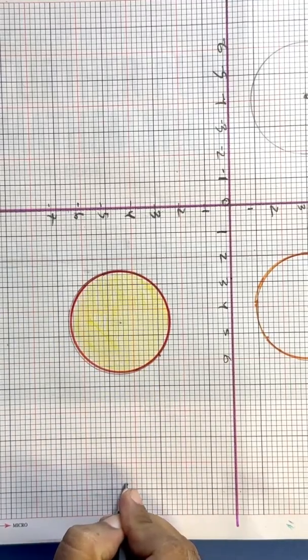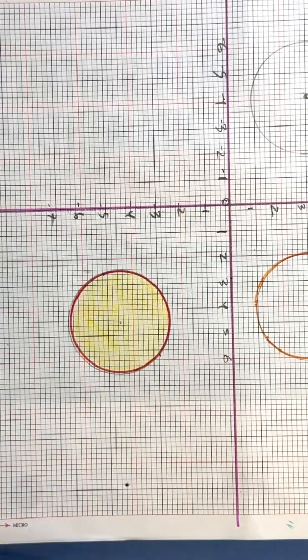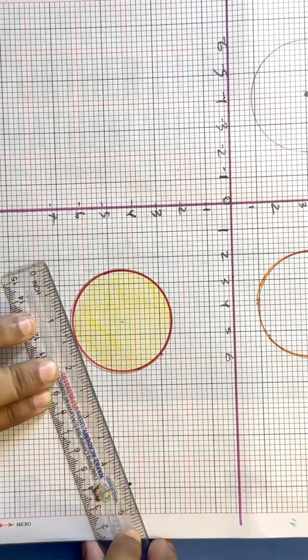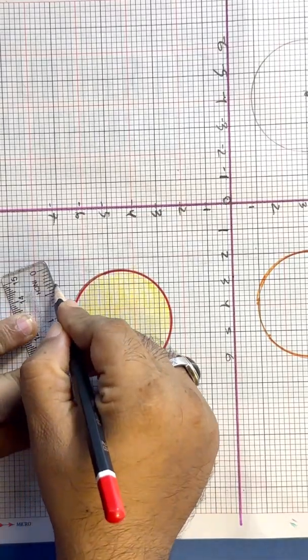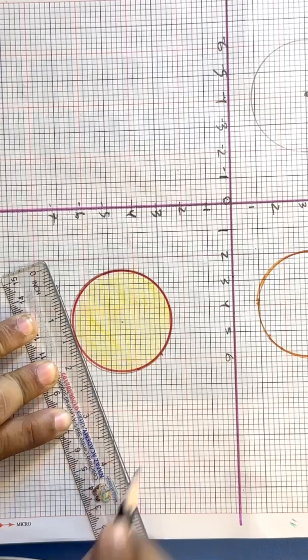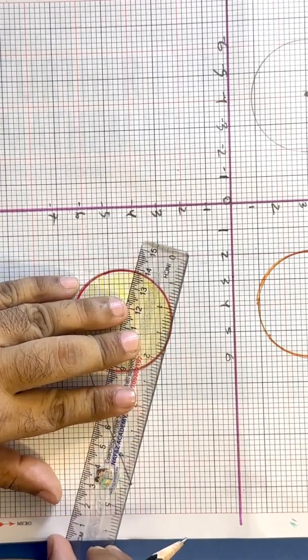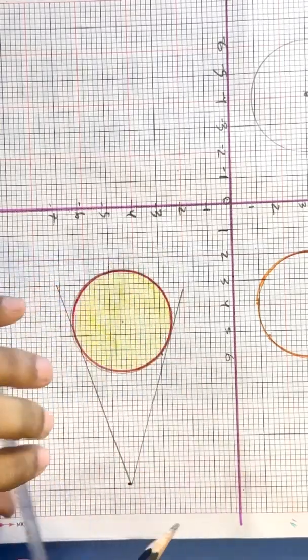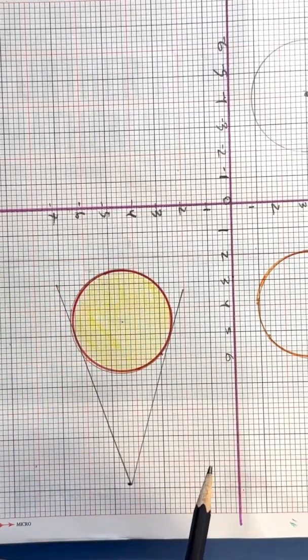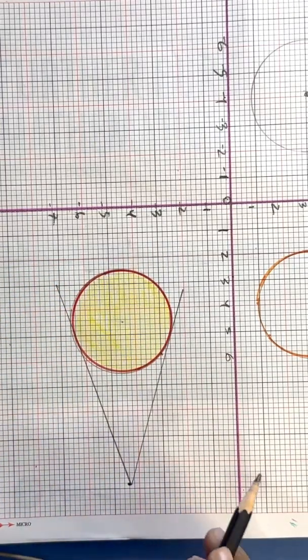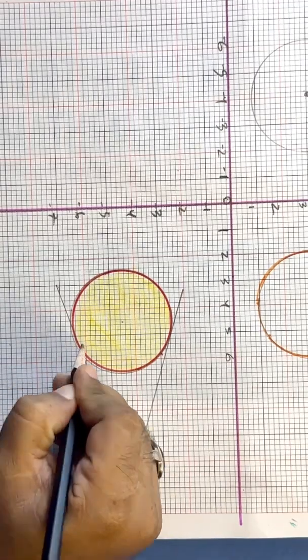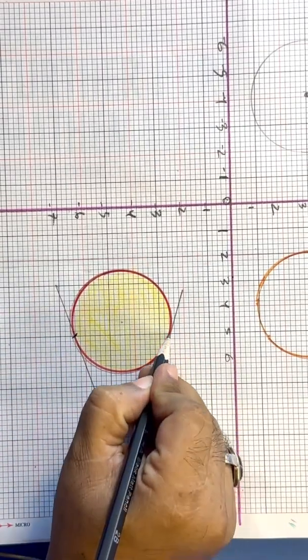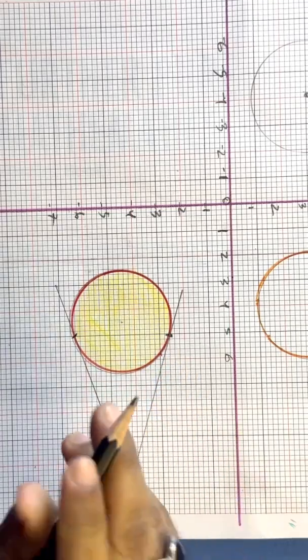To draw a tangent to the direction of the circle, I draw a tangent and another tangent. Tangent means a line which intersects the circumference of the circle. Here is an intersection point, and maybe there is another intersection point.